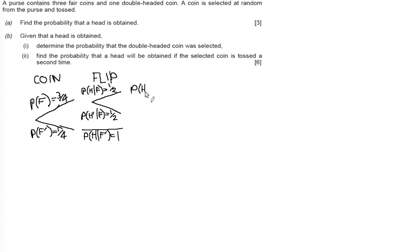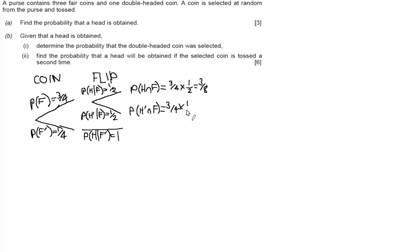On the first branch, the probability of getting a head and a fair coin is three-quarters times one-half, which gives us three-eighths. The probability of not getting a head and a fair coin is also three-quarters times one-half, which is also three-eighths. Finally, the probability of a head and an unfair coin is one-quarter times one, which equals one-quarter.